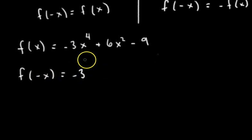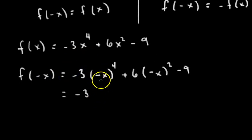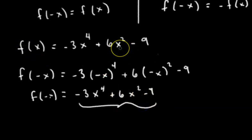We'll plug in negative x everywhere there's an x. So simplifying, we have negative x to the fourth - that's an even power, so this just becomes positive x to the fourth plus 6. Same thing here. Negative x squared is just x squared, and then minus 9. So what do you notice? f of negative x equals this thing, which is the same as f of x. After you do your simplifying, after plugging in negative x, you get the same original function.